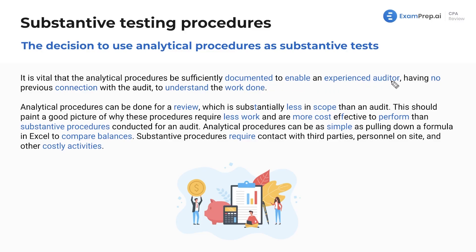It's vital that analytical procedures be sufficiently documented to enable an experienced auditor with no previous connection to the audit to understand the work done. This ties heavily into audit documentation — the general rule is to document everything so thoroughly that someone can come in, see what you did, and redo it. High turnover in the field makes this even more important. Analytical procedures can be done for a review, which is substantially less in scope than an audit, so watch out for questions about analytical procedures — they can help significantly on the exam.